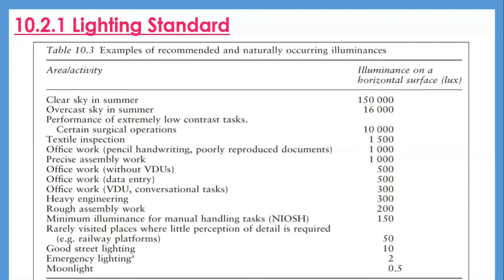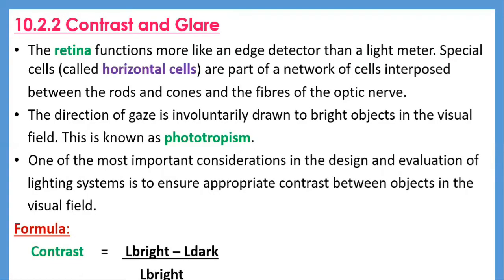US readers should refer to the IES Lighting Handbook for up-to-date recommendations, while readers outside the US may find the CIBSE Code for Interior Lighting useful. The eye can operate under an extremely wide range of illuminance levels, owing largely to the differential sensitivity of the photopic and scotopic systems. Another subtopic is contrast and glare.